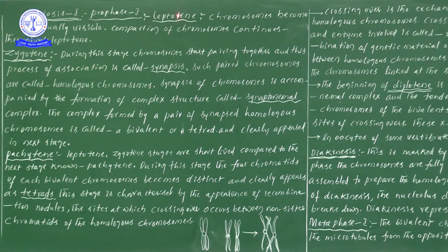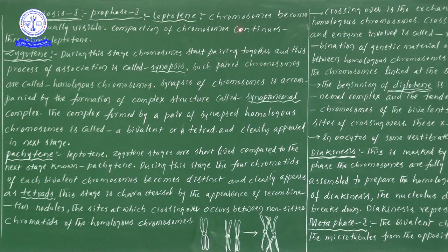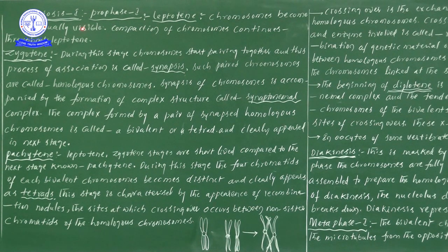So first, let us start to discuss Leptotene. In this particular sub-stage of Leptotene, the main important point is: chromosomes become gradually visible. Here in the first point itself, chromosomes are gradually visible.